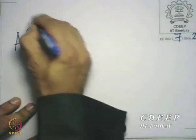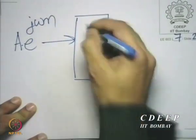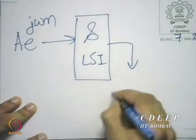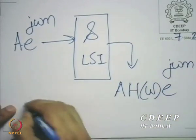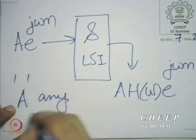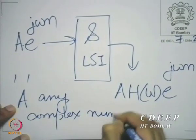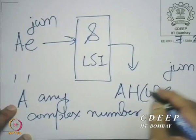Now, if I have a sum of complex exponentials, it is a very simple thing to see that I can multiply both sides by any complex number. If I take A times e raised to the power j omega n and give it to the same LSI system, I would get A times H(omega) times e raised to the power j omega n, where A is any complex number, provided H(omega) converges.